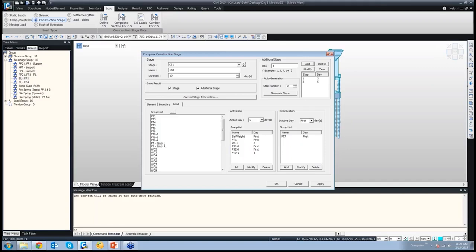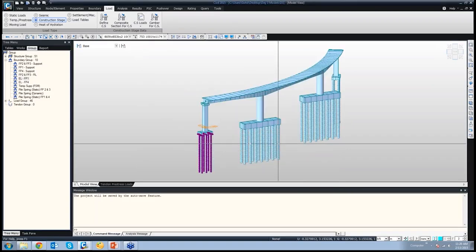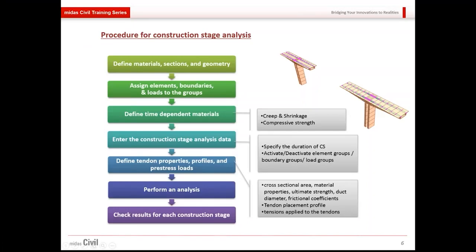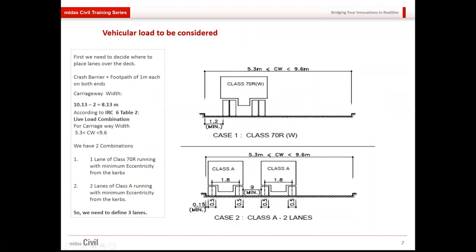Now we'll have a look at moving loads. First we need to decide where to place the lanes over the deck. Crash barrier and footpath together are considered to have 1 meter width at both ends, so the total carriageway width is 8.13 meters. According to IRC6, with a width of 8.13 meters, it will have two lanes of Class A and one lane of Class 70R. In all, we need to define three lanes, since the lane considered for Class A will be different from that for Class 70R.